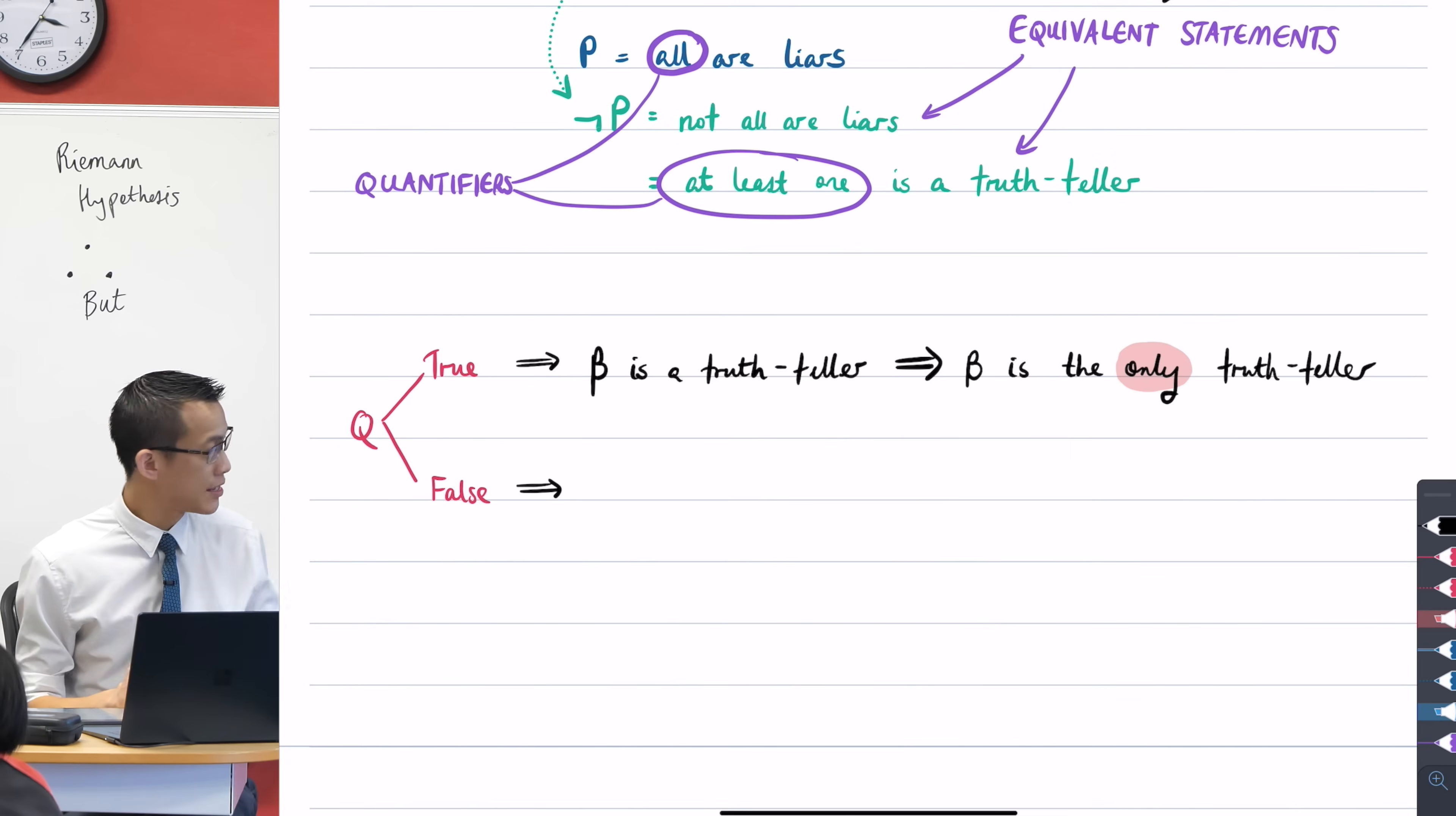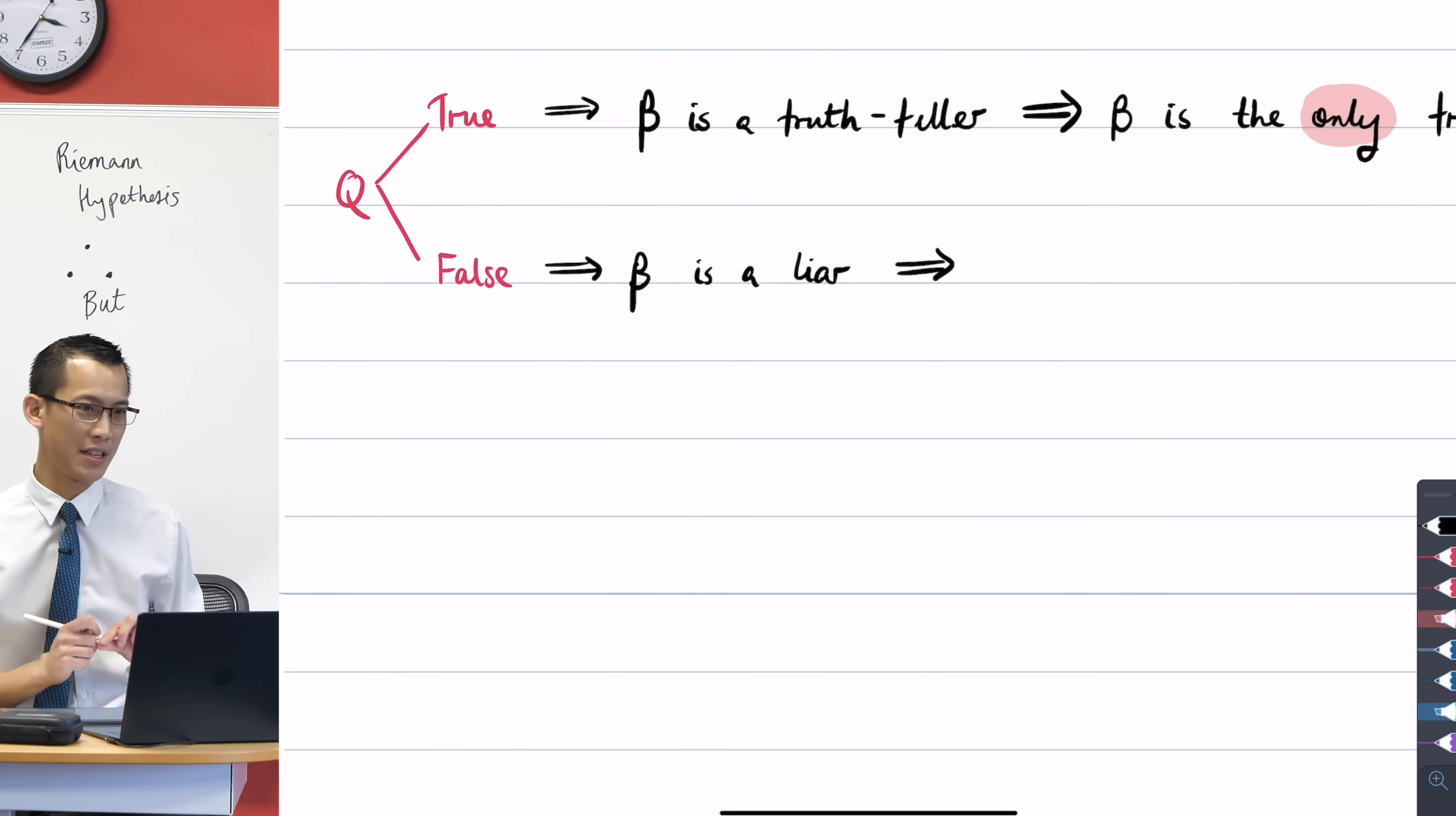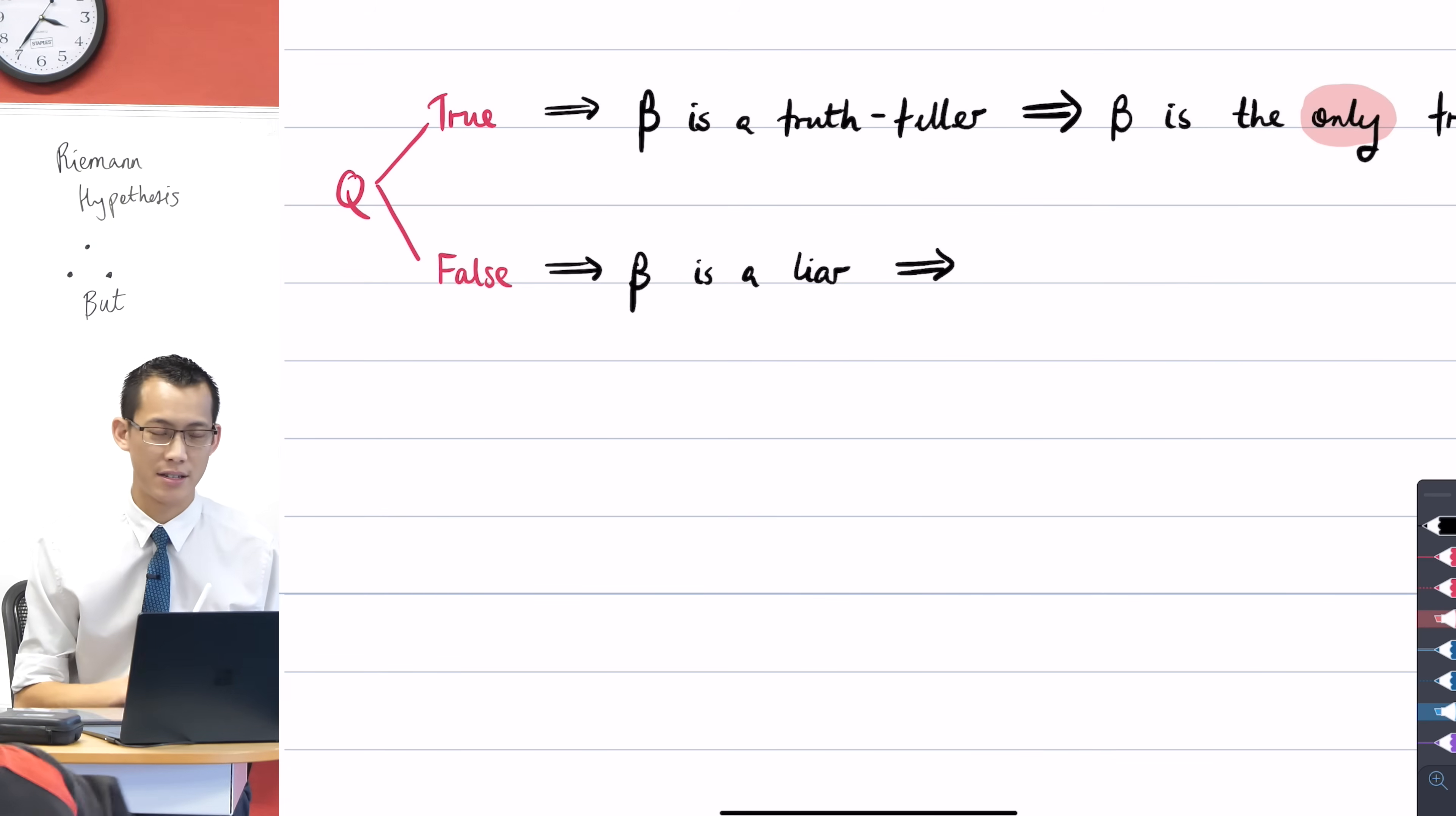Now at the moment on this logic, I've just supposed that it's true. I don't actually know it for a fact. So I'm going to have a look at this other branch and see what happens. What if statement Q is false? What can we say about beta if their statement's false? Yep, they're a liar. Beta is a liar. But this implies some interesting things here.